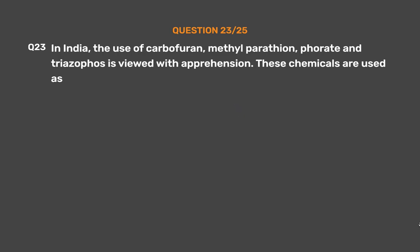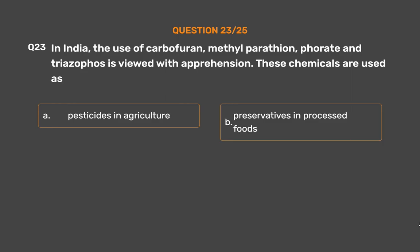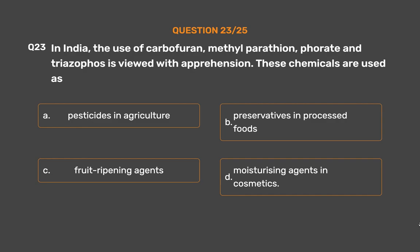Question No. 23: In India, the use of carbofuran, methylparathion, phorate, and triazophos is viewed with apprehension. These chemicals are used as ___. Option A: Pesticides in agriculture. Option B: Preservatives in processed foods. Option C: Fruit ripening agents. Option D: Moisturizing agents in cosmetics.